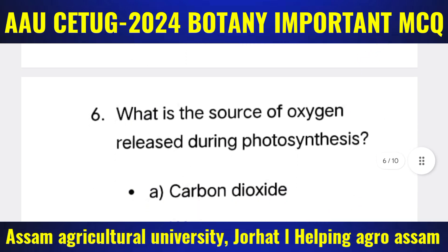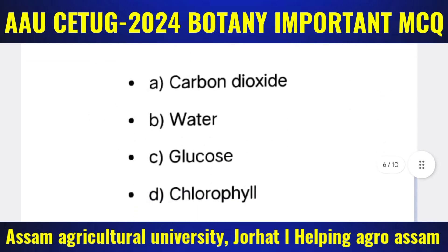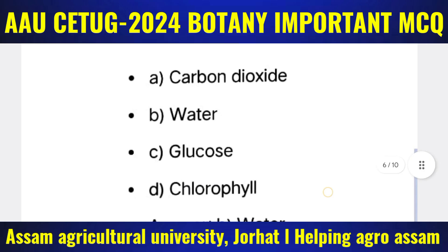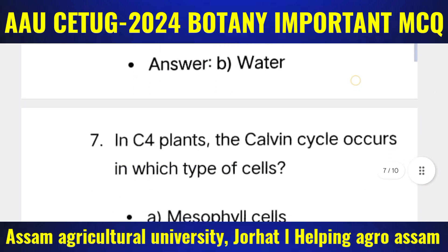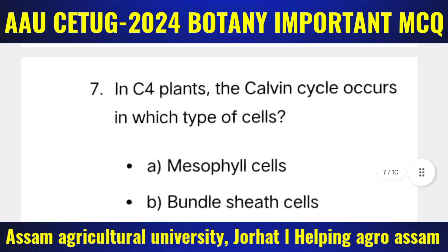Next question: What is the source of oxygen released during photosynthesis? The options are: (a) Carbon dioxide, (b) Water, (c) Glucose, (d) Chlorophyll. The correct answer is option B — Water.